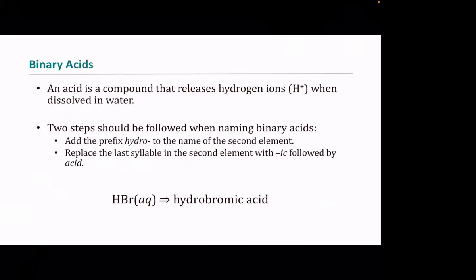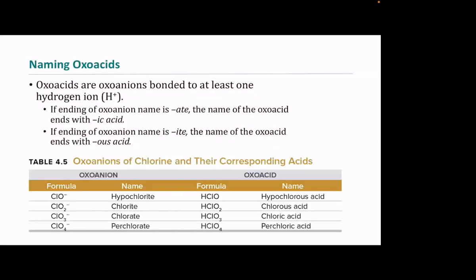For acids, I'll leave most of this to you. For binary acids, add 'hydro-' and '-ic': HBr is hydrobromic acid, HCl is hydrochloric acid. For oxoacids, there's a series: perchloric acid, chloric acid, chlorous acid, and hypochlorous acid — these correspond to the chlorate series of anions.